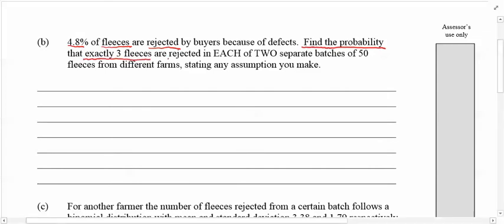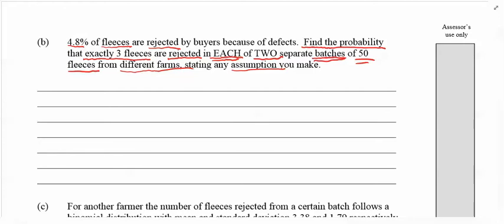Last page: 4.8 percent of fleeces are rejected by buyers because of defects. Find the probability that exactly three fleeces are rejected in each of two separate batches of 50 fleeces from different farms, stating any assumptions you make.